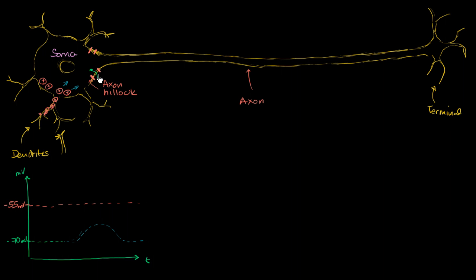Those are the sodium channels to get positive charge in, and here are the potassium channels to get positive charge out. The axon hillock has a ton of these channels because once they get triggered, they can trigger an impulse that can travel down the entire axon and stimulate other things — maybe in the brain or whatever else this neuron might be connected to.